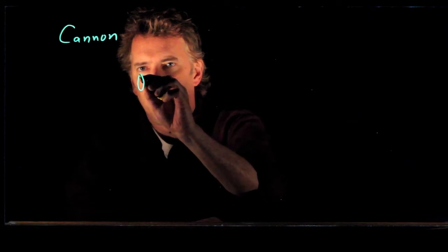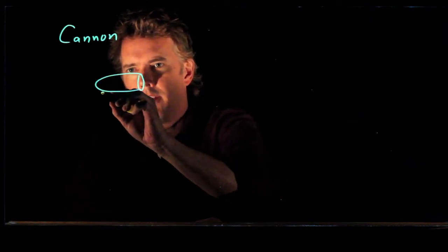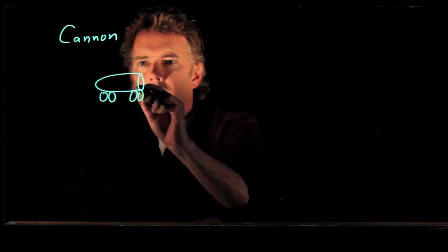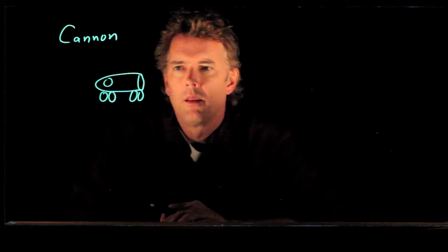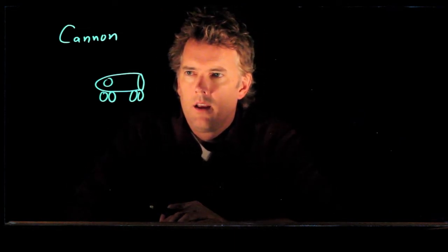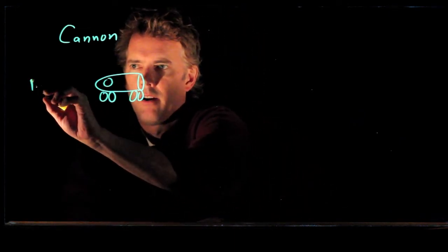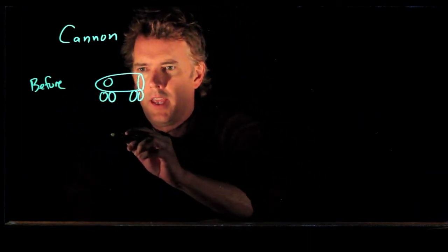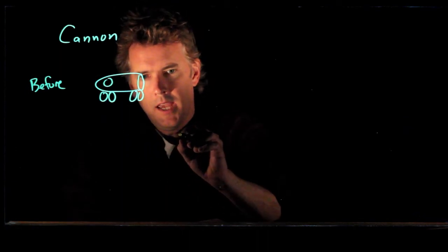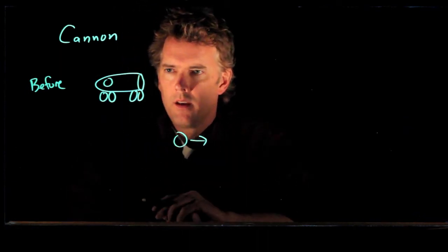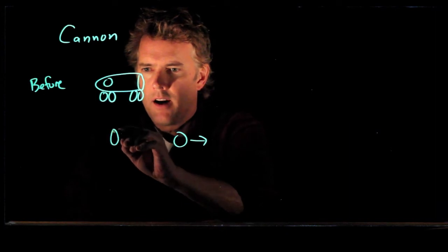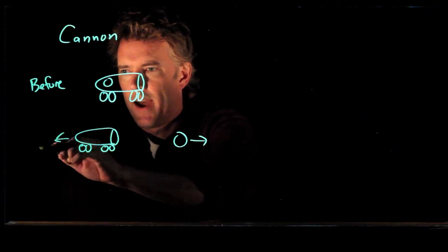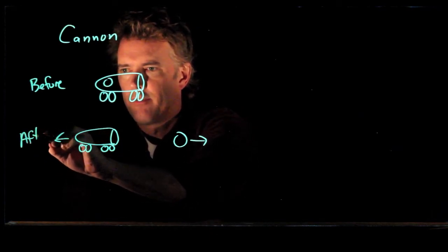So what does a cannon look like? A cannon looks like this — it's on some wheels and inside is a cannonball. This is before you fire off the cannon. Now after you fire off the cannon, what happens? Well, the cannonball heads this way, but the cannon itself recoils — so it heads that way. This is after you fire off the cannon.